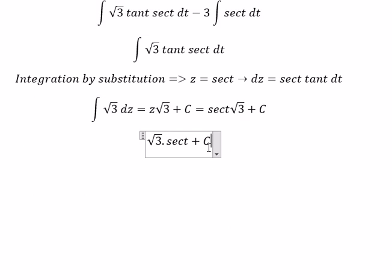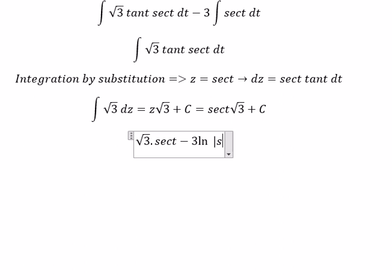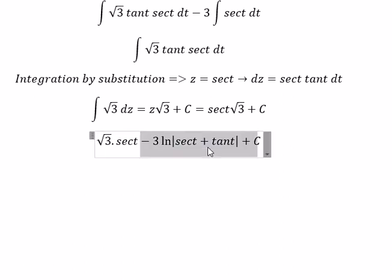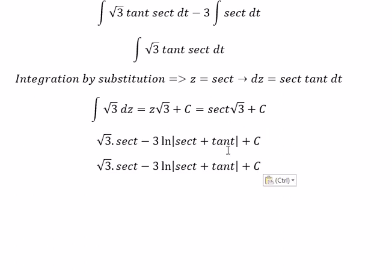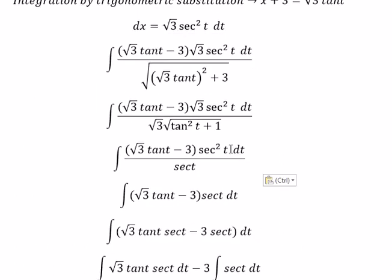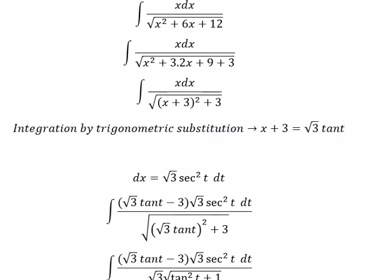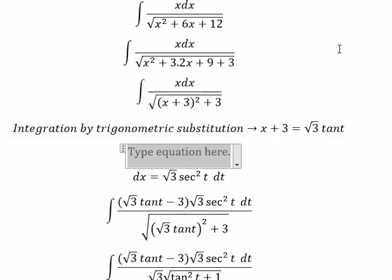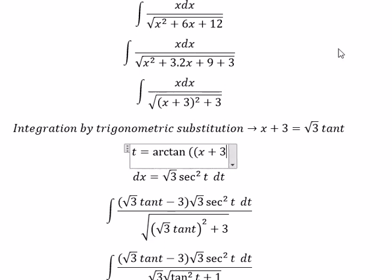We divide both sides by the square root of 3. For the second integral, we put negative 3t, then negative 3 multiplied by the natural log of the absolute value of secant of t plus tan of t. For t, we need to change back in terms of s, so we divide both sides by the square root of 3, and you get t equals arctan of (s plus 3) over the square root of 3.